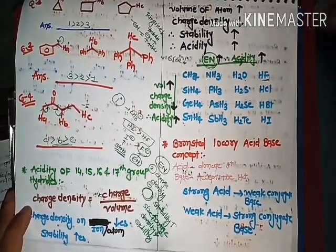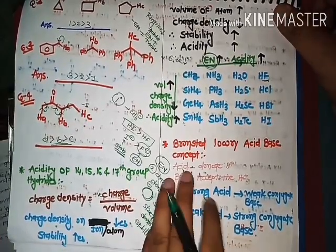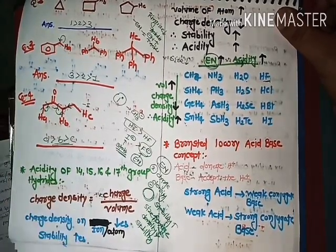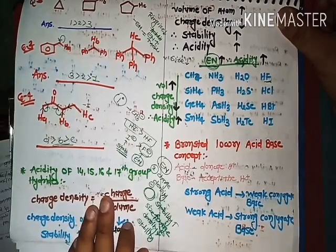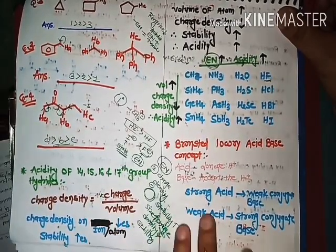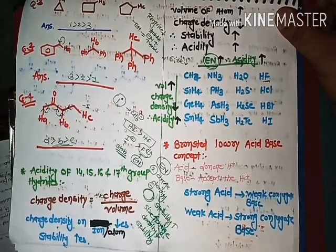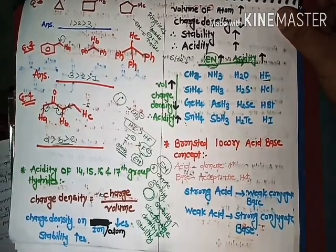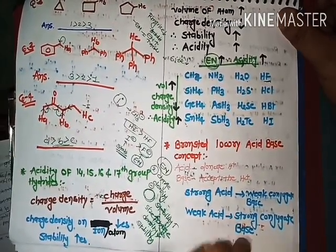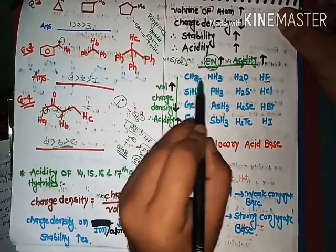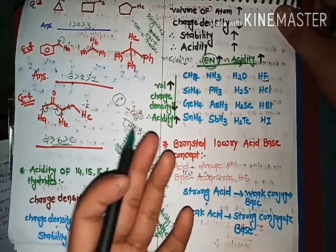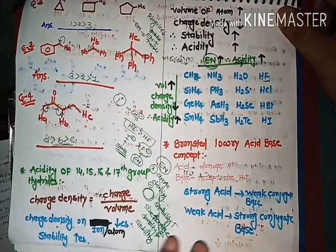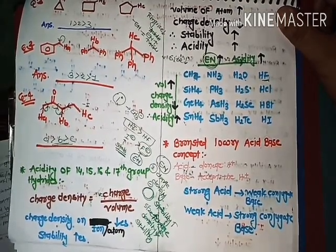Next: Lowry-Bronsted acid-base concept. According to Bronsted-Lowry theory, an acid donates H+ and a base accepts H+. A strong acid is one whose conjugate base is weak — meaning more stable. A weak acid is one whose conjugate base is strong — meaning less stable. For example, CH4's conjugate base is CH3 minus, which is very basic and will pull back the proton, making CH4 a weak acid. So a weak acid has a very strong conjugate base.